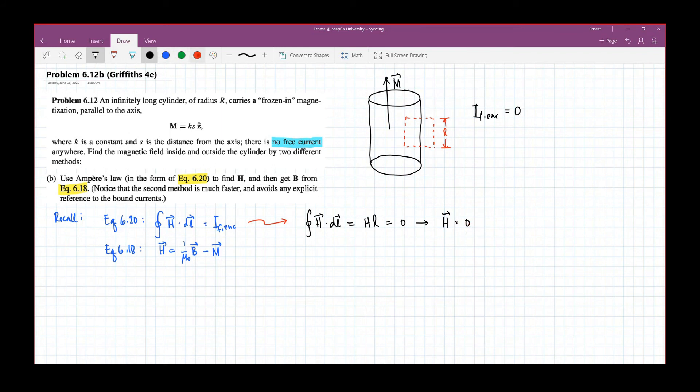Then using this equation, you now have zero equals one over mu naught B minus M, where M is ks z-hat. So this becomes ks z-hat, which gives us the magnetic field to be equal to mu naught ks z-hat.